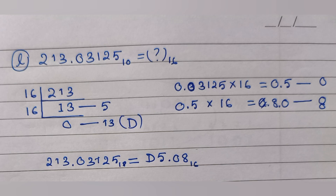Now for converting a decimal number with a fractional part into hexadecimal, we do the sum in two parts. First we divide the whole number part by 16 and get D5. Then for the fractional part we multiply by 16 until the fractional part becomes 0. First we get 0.5, so we write 0. Then 0.5 into 16 gives 8.0, so we write 8. The final answer is D5.08.